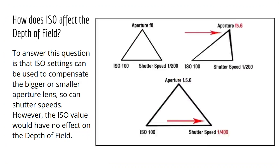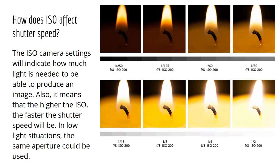How does ISO affect depth of field? Depth of field mainly affects the aperture, and it does affect shutter speed because it compensates based on the lens opening size, but it does not affect the ISO value.